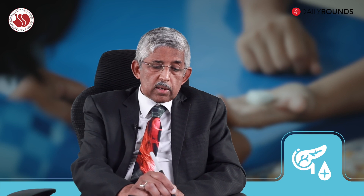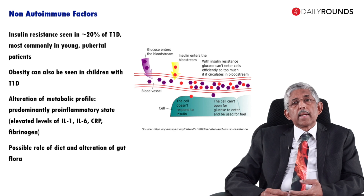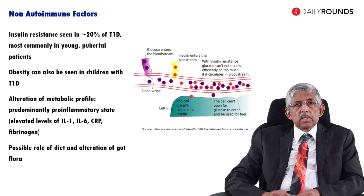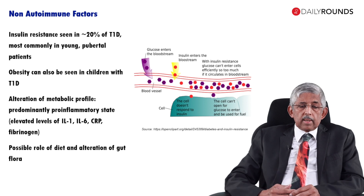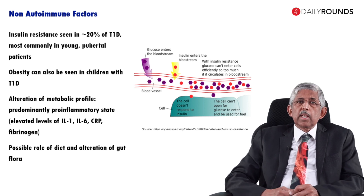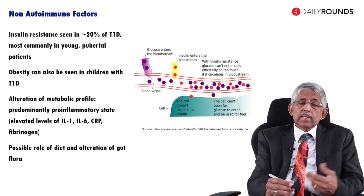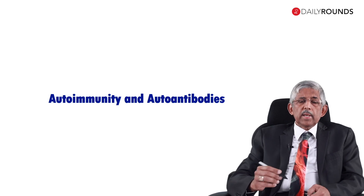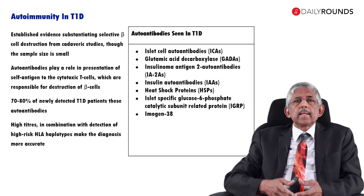There are also non-antibody mechanisms. For example, if you look at inflammatory markers, you will find that the levels of IL-1, IL-6, and C-reactive protein can be increased, especially in those who have insulin resistance. Very rarely you can also have obesity occurring in children with type 1 diabetes.